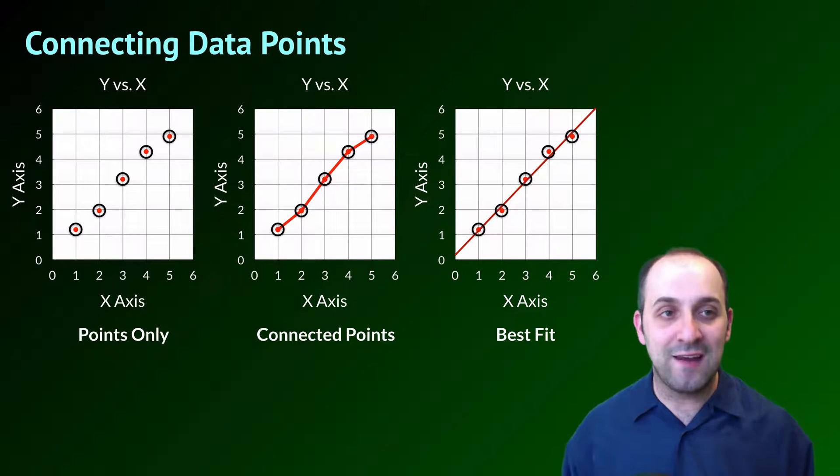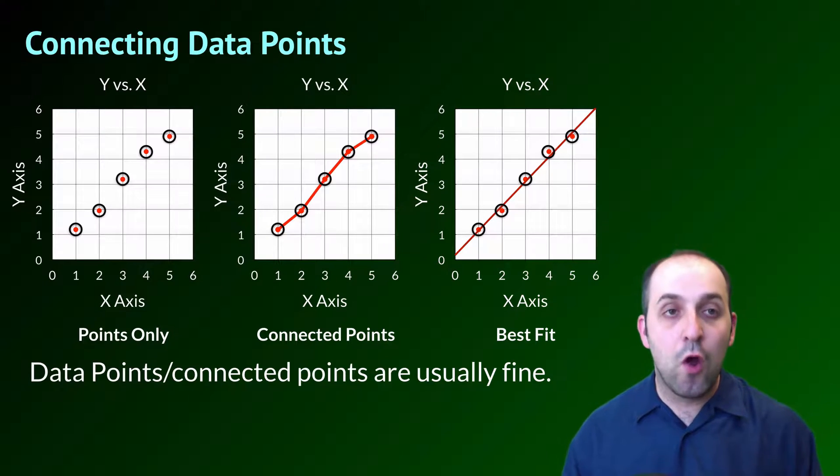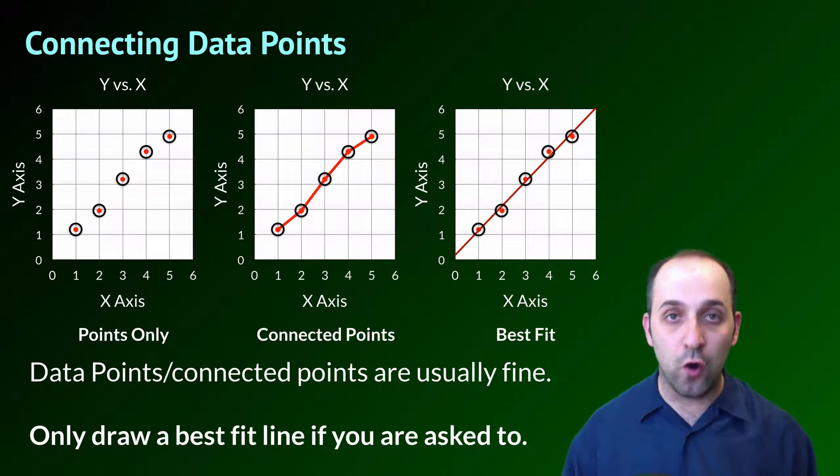When we get to the point of connecting our data points, we've got a couple of different options. I've shown you three of them here. We see a graph with no data points connected. That's just what we call points only. Or we see a graph with straight lines connecting our data points. And the last one we see is what we call the best fit line. Here's what I would like you to take away from this. For our graphs that we're going to create in class, the only things I ever really want you to do are to use data points without connections or to connect the points. I never want you to use a best fit line unless I absolutely tell you that you should, or if I'm letting you use a computer program. For real graphs, best fit lines are almost always created using a computer program because the mathematics that's involved in determining them is a little bit complex.